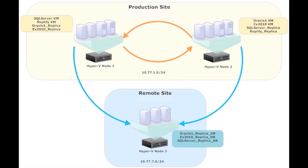In summary, DoubleTake Availability Virtual Host Edition for Hyper-V allows failover between hosts on the same subnet as well as remote subnets with very little downtime — typically two minutes only. If you do require zero downtime, you should consider DoubleTake Availability GeoCluster, which allows live migrations between sites, and this will be covered in a later video.